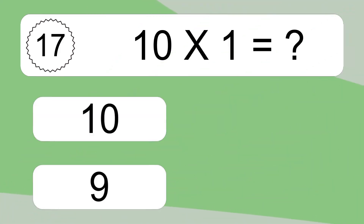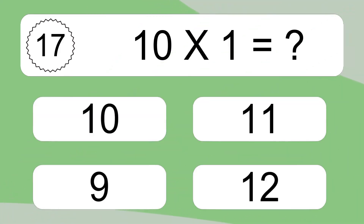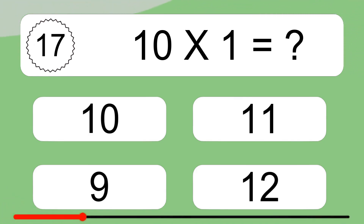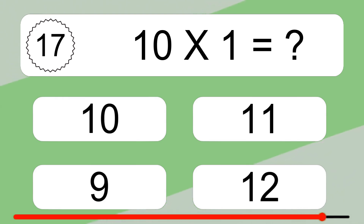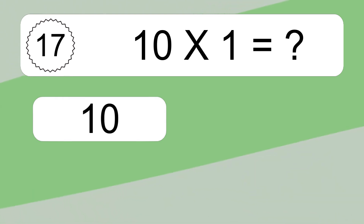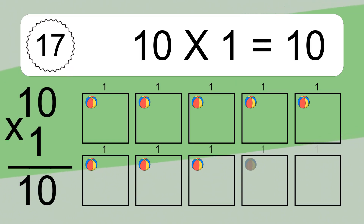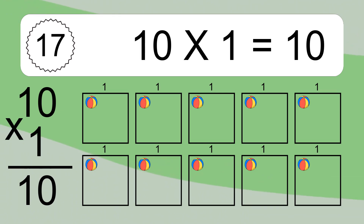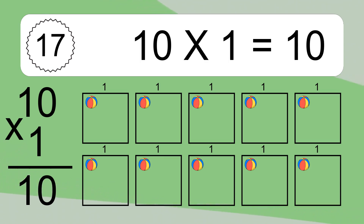10 times 1 equals what? 10 times 1 equals 10. We have 10 boxes, and each box has 1 colorful ball inside. If you count all the balls in all the boxes together, you will have 10 times 1 balls. This equals 10 balls.